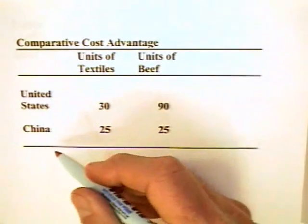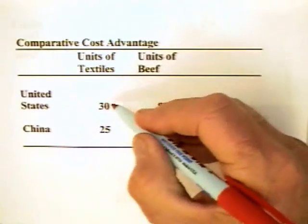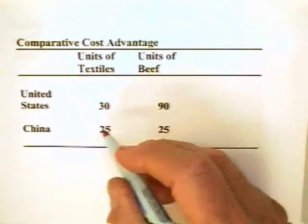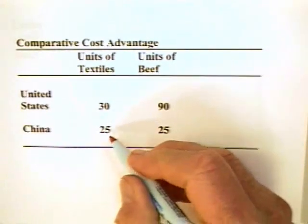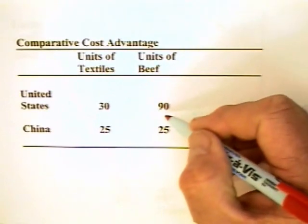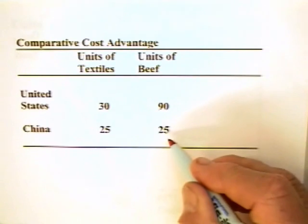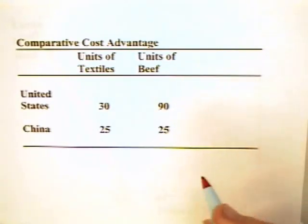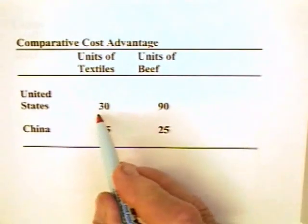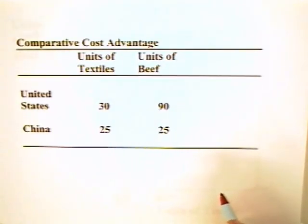Here we have two countries, the United States and China. The United States can produce 30 units of textiles; China can produce 25 units in the same amount of time or with the same amount of resources. The United States can produce 90 units of beef and China can produce 25 units of beef. The United States is absolutely more productive in both lines of production, but the United States has a comparative advantage in one of these goods.